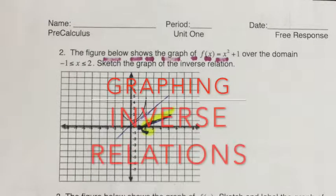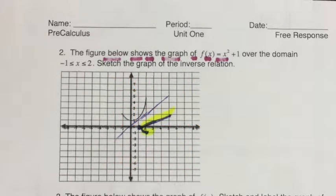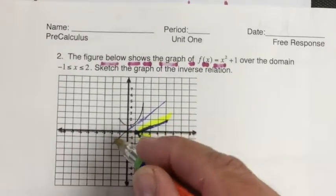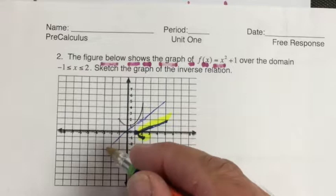When you're trying to create the inverse relation graph, if you have the graph of something and you want the inverse relation, the first thing you need to do is graph the line y equals x. That's this diagonal line right here.